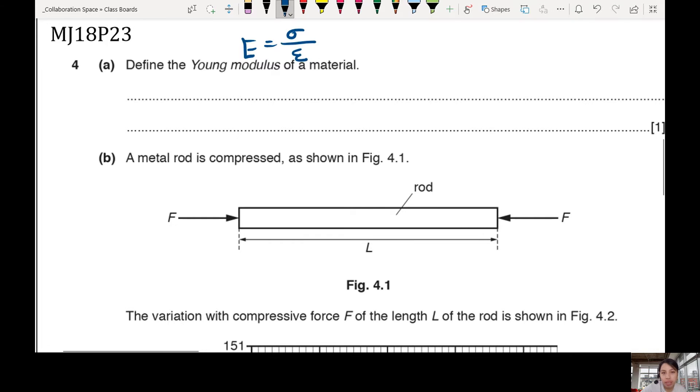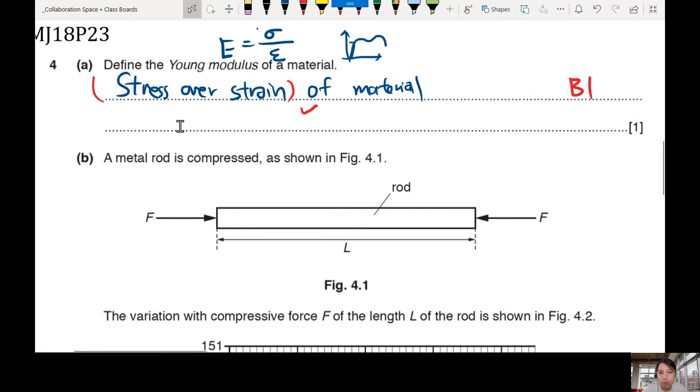Young's modulus is stress over strain. You can use the equation to help define it. It's a ratio, strain of material. The more accurate way of representing, if it's a curvy graph - young modulus sometimes got curvy - then you have to look at the stress over strain at the part where it is linear, so the beginning part. But anyway, this is one definition. Stress over strain, you're good to go.